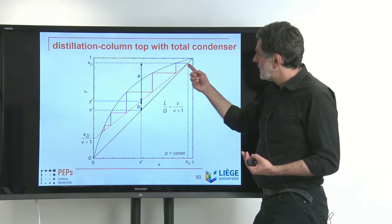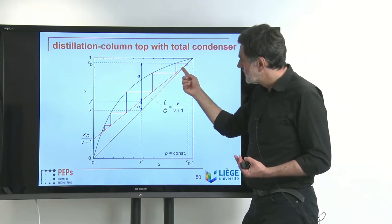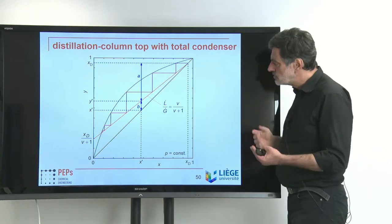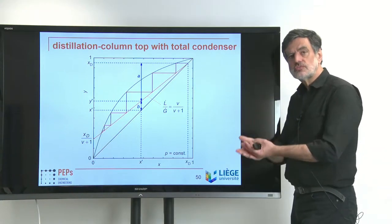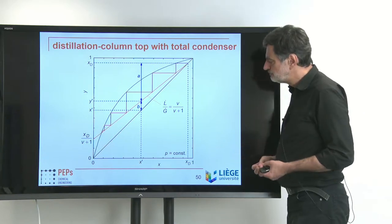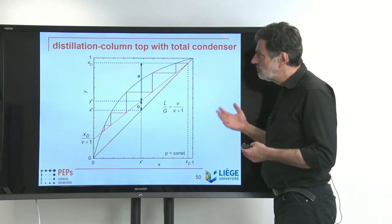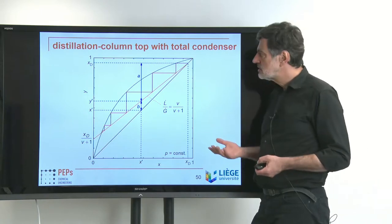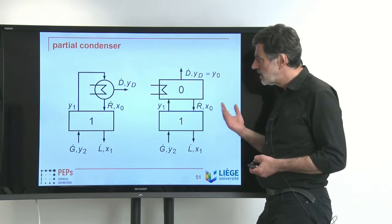So: diagonal above, at x_D a kink with the new slope below, which corresponds to the L̇/Ġ found in the rectifying section of the column. Now we want to go further. The next case to regard is a partial condenser.